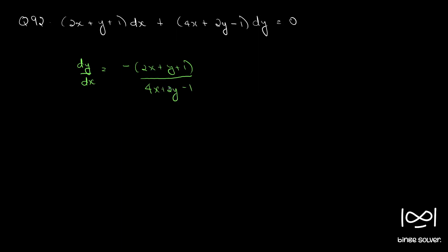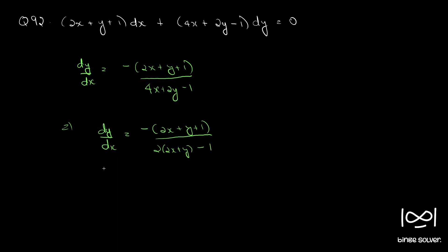As you can see, this is in the form dy/dx equal to minus of (2x + y + 1) over 2 times (2x + y - 1). So here it is a function of (2x + y), we can say.